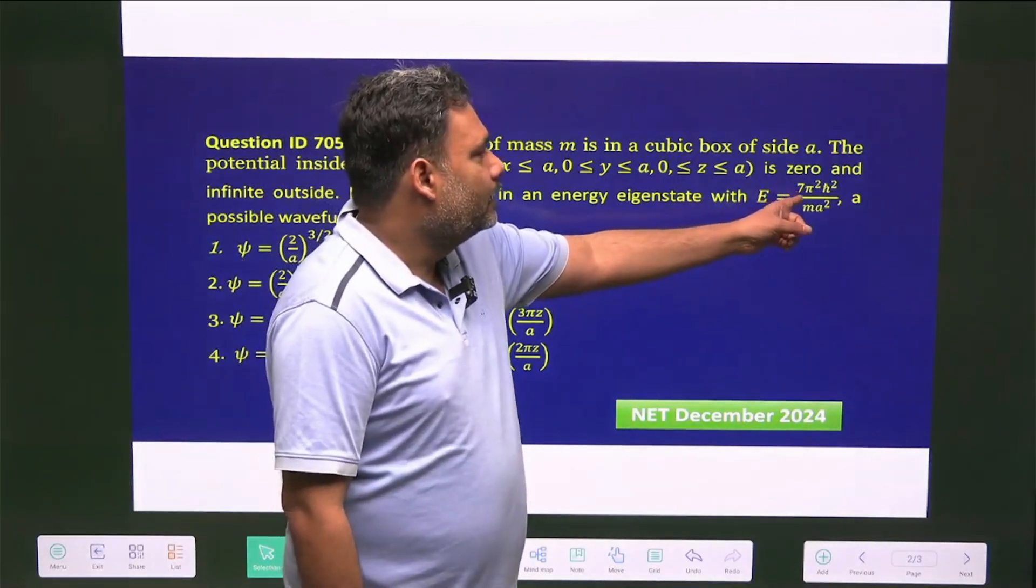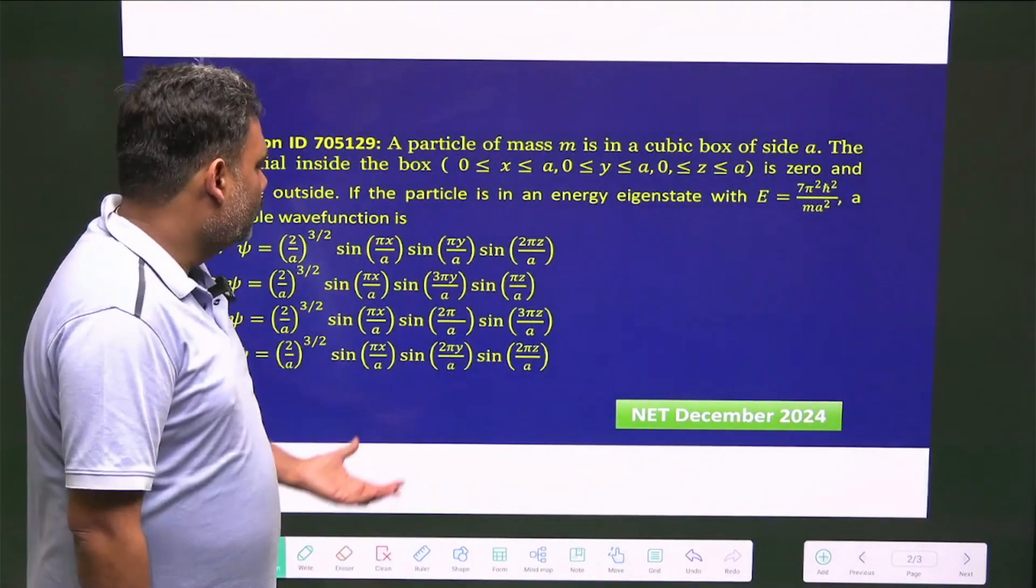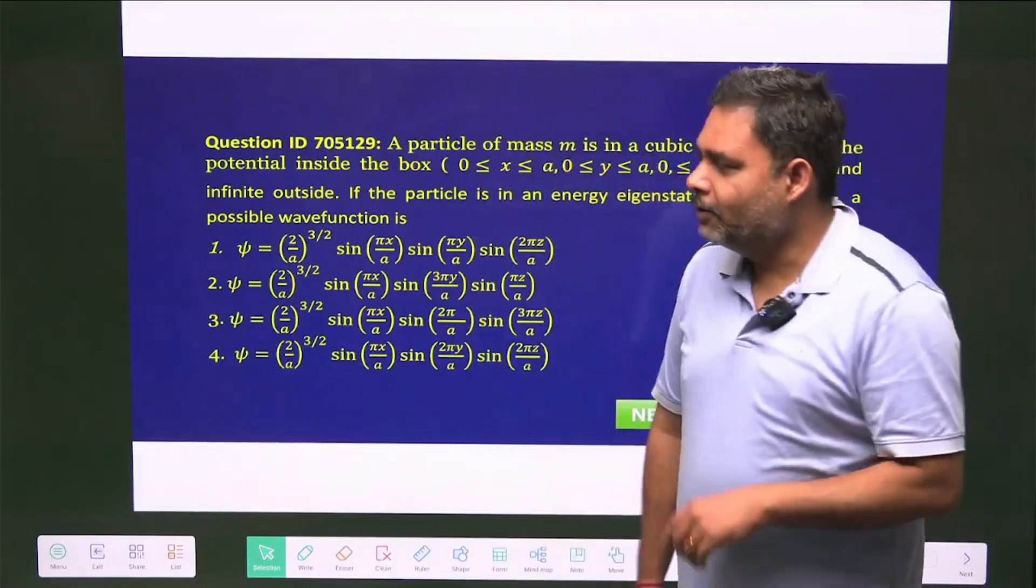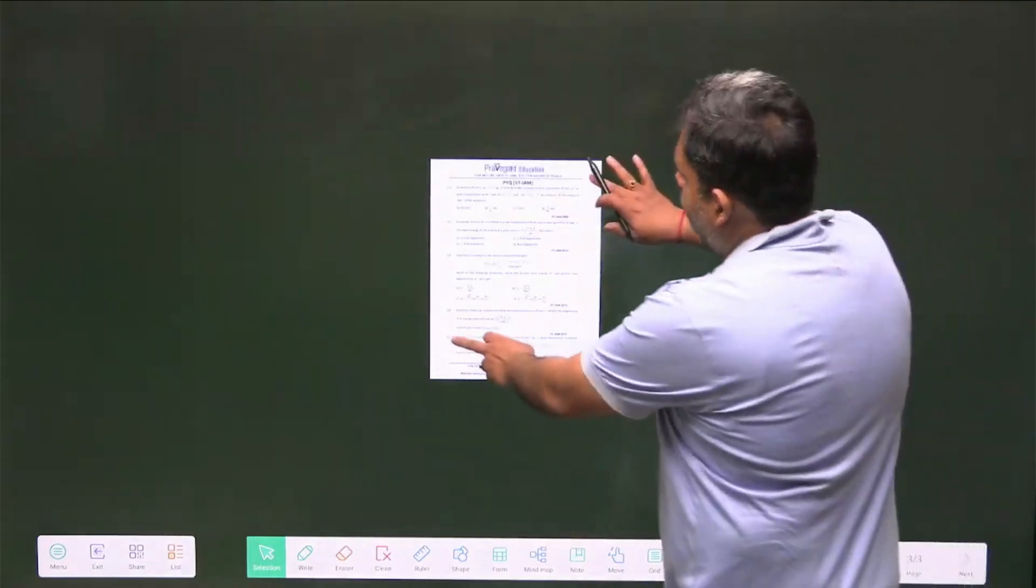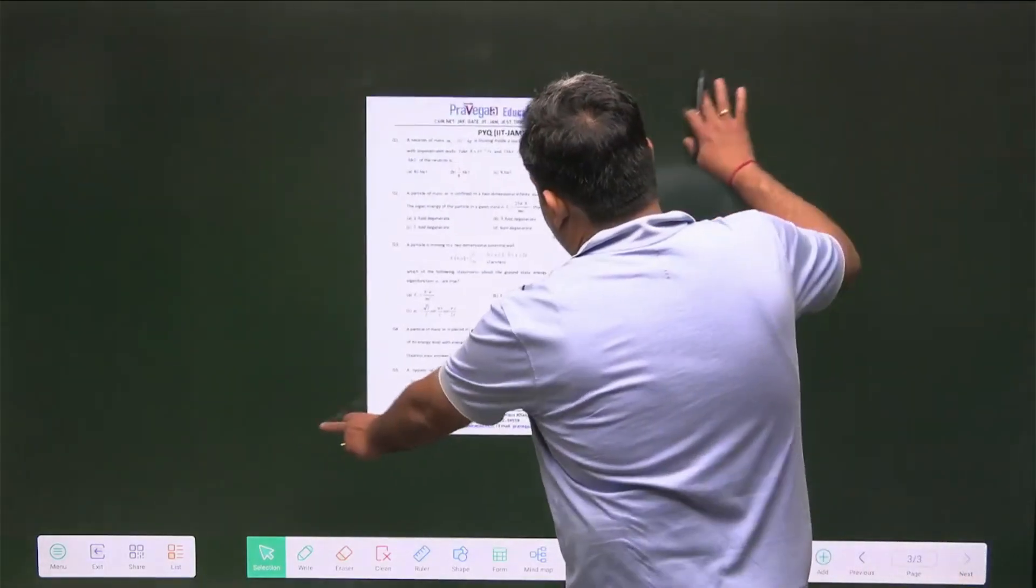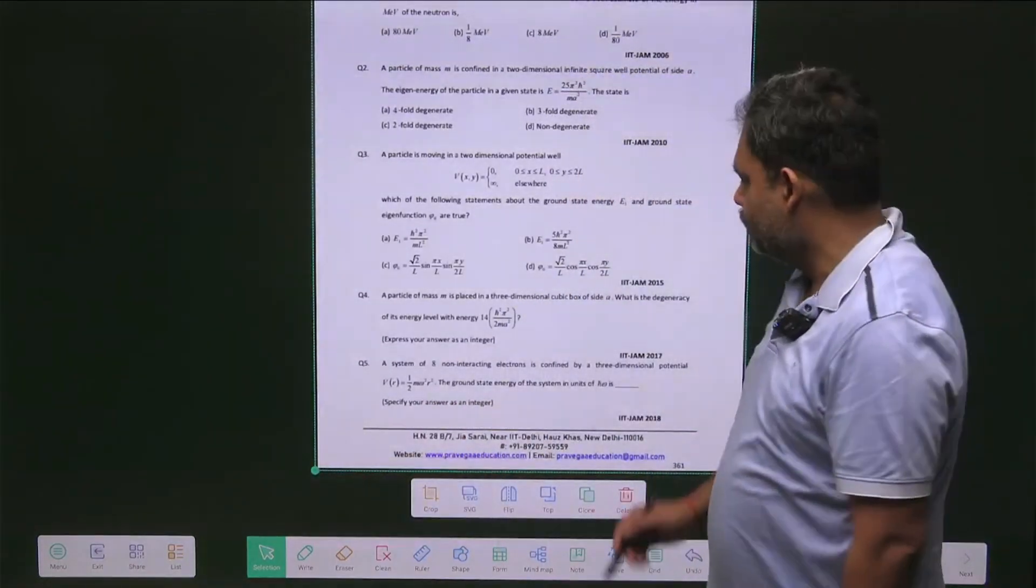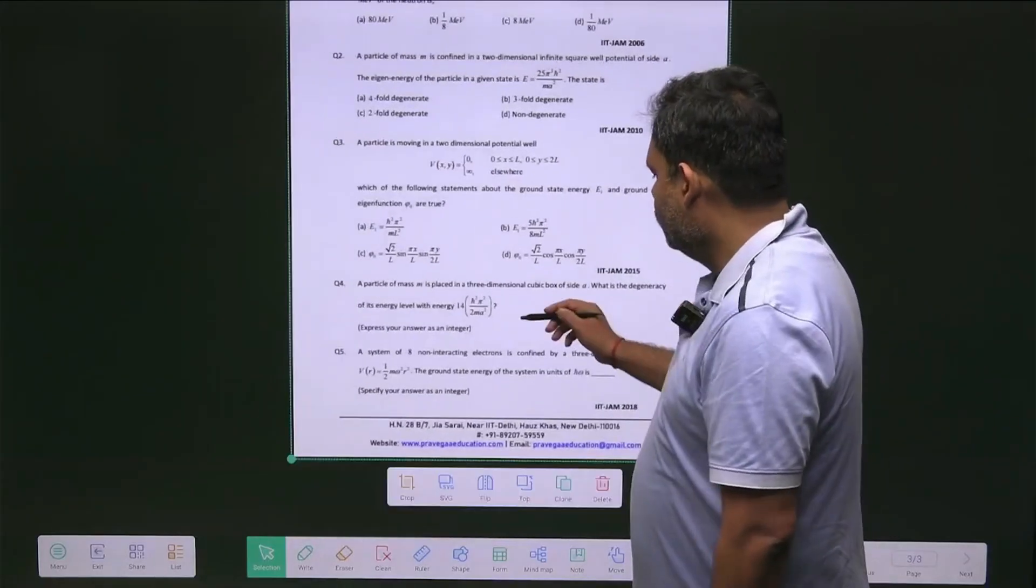The particle is in an energy state with energy equal to 7π²ℏ²/ma². What should be the possible wave function? One of the simplest questions ever asked. You can see this is our study material, and this is an IIT JAM examination question.